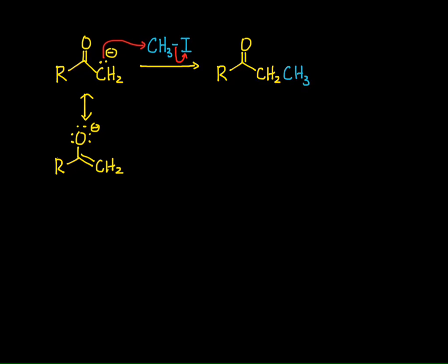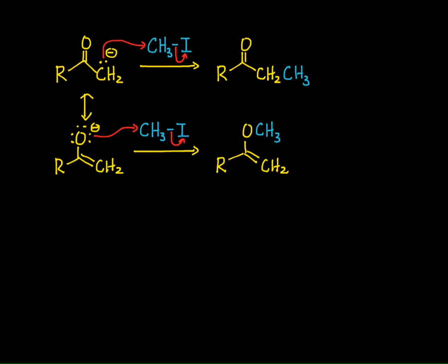If we think about the enolate with the negative charge on the oxygen and react that with an alkyl halide like methyl iodide, now the oxygen is going to donate a pair of electrons, displacing the iodide, and you get methylation or alkylation at the oxygen.